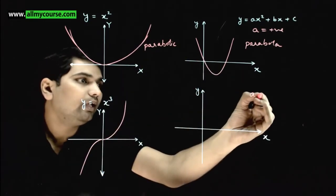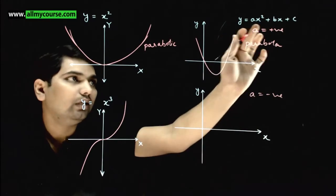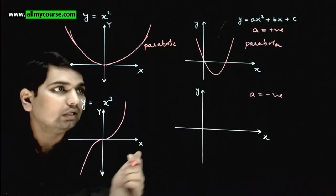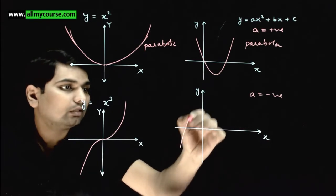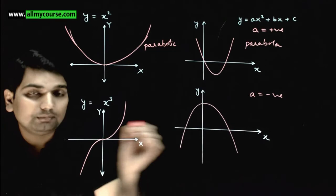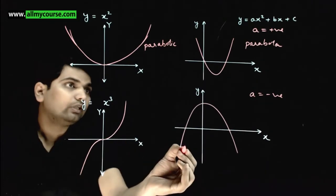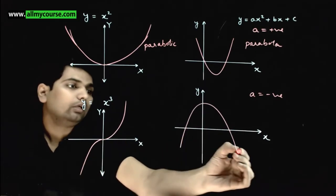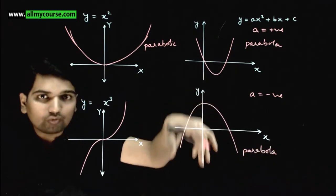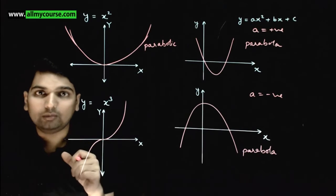But if the value of a becomes negative, the equation is the same - ax square plus bx plus c - then your graph will be like this. Now this graph, if you look carefully, is still a parabola. But this parabola is downward opening. This is a downward opening parabola.